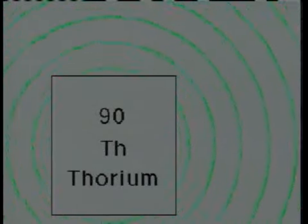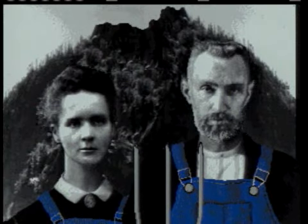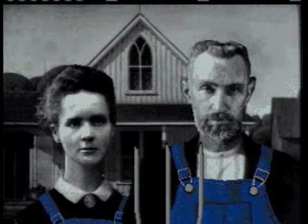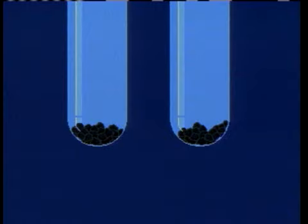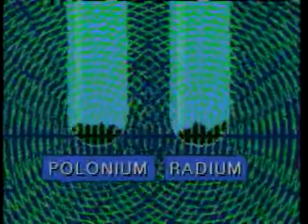Along with her husband Pierre, Marie started with a huge pile of pitchblende ore and developed a laborious process to extract very small amounts of two new elements which were powerful emitters of Becquerel rays. They named these elements polonium and radium.